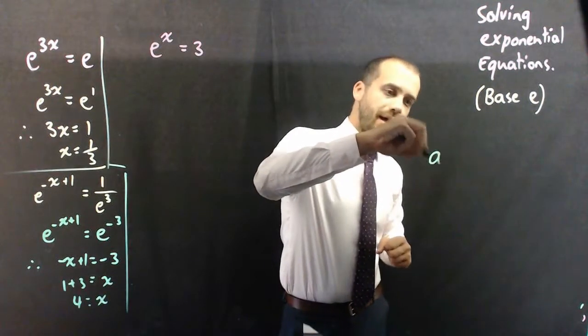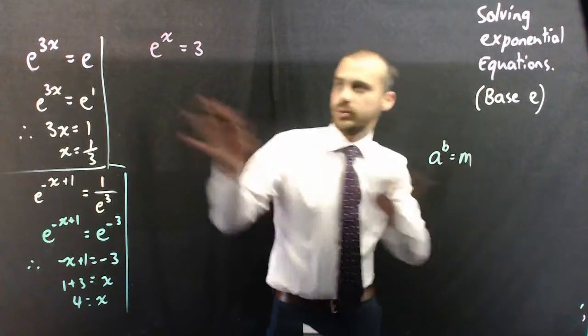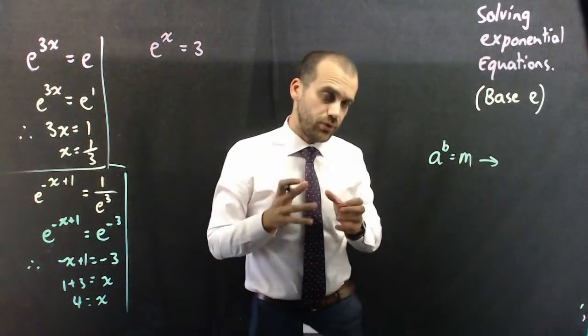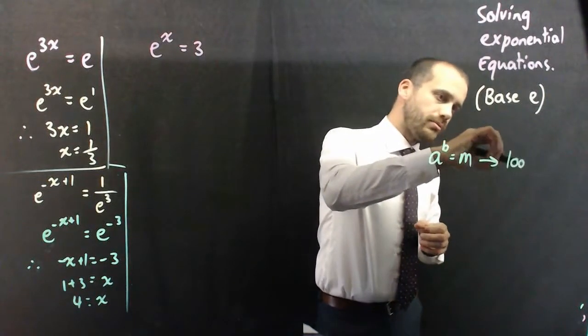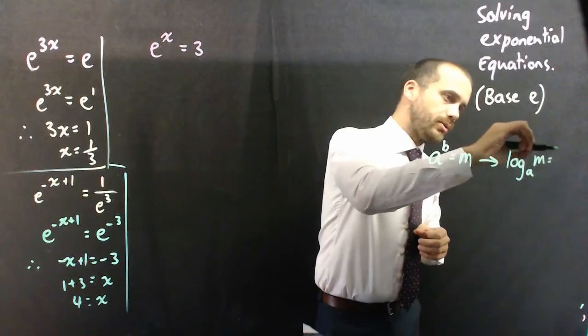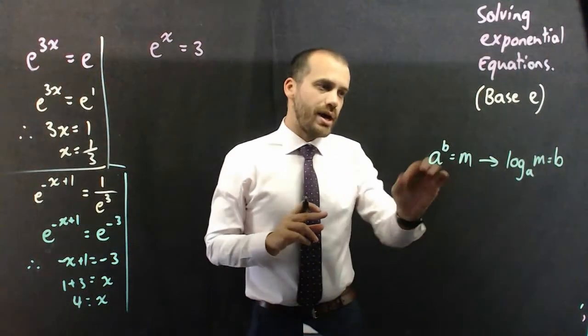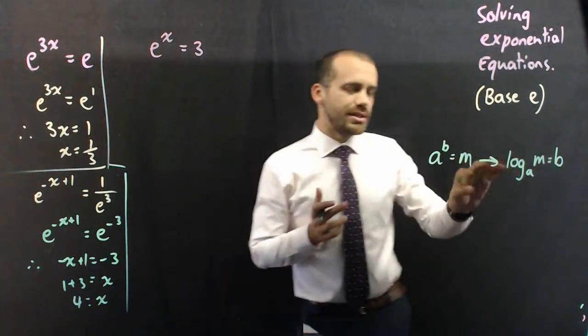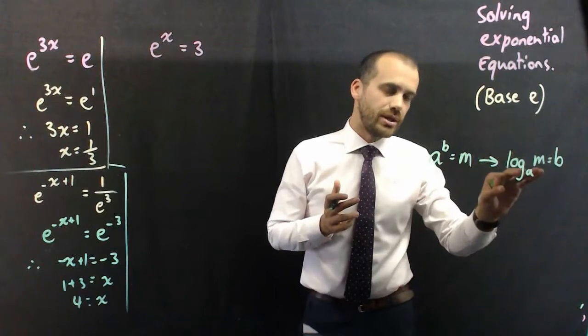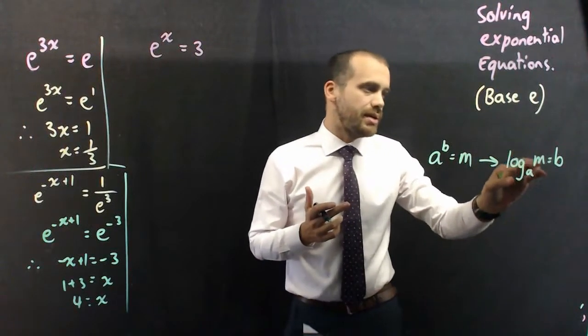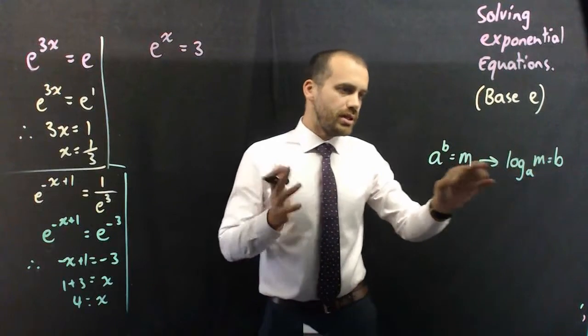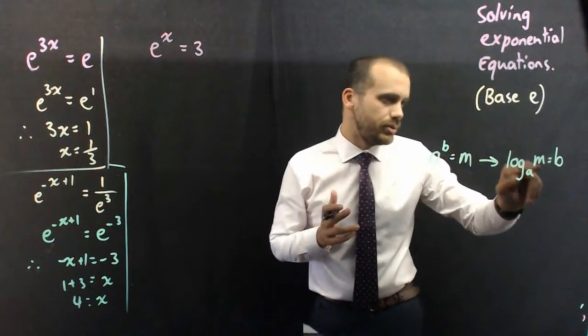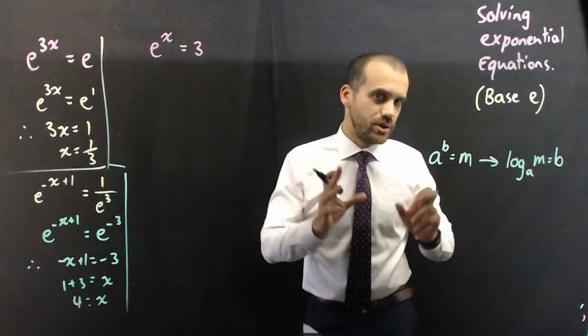If I've got a to the b is equal to m, which is what I have there, I could rewrite that in logarithmic form as log base a, m equals b. This is a way of communicating that relationship in exponential form, a to the b equals m. This is another way of communicating the same relationship, log base a, m equals b. We're saying a to the b equals m, and here we're saying a to the b equals m. It's just another way of communicating the same thing.